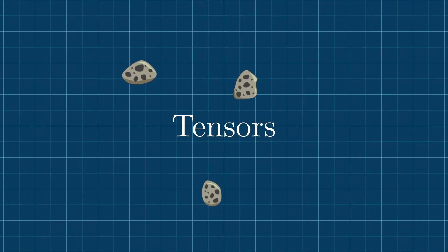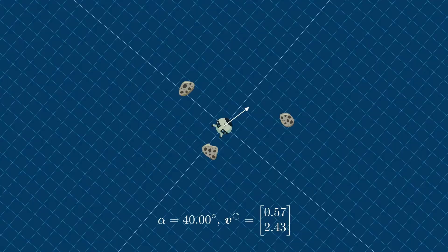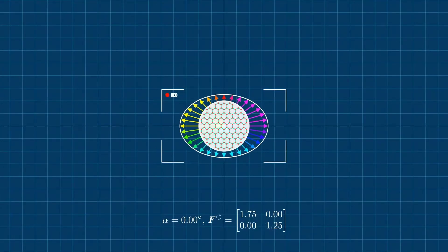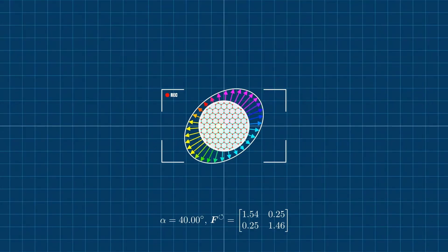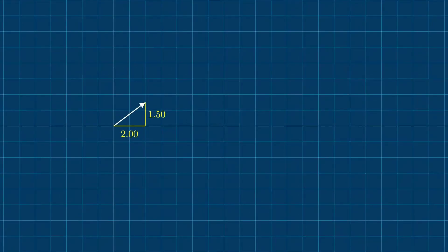In this video we will talk about tensors. We will learn how tensor components change when we rotate the coordinate system and how this transformation can be interpreted as a change of observer. Finally we will clear up a common misconception about rotating tensors, which might be obvious to some but is still worth clarifying. We'll start with first order tensors and later discuss second order tensors.